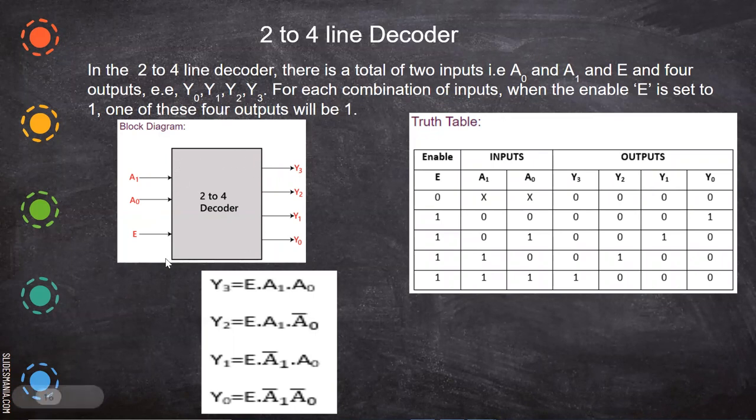In order to enable this decoder, if it is 0, this will not work. If it is 1, then the whole circuit will work. This is only a power for this. You can say it as a power for this two to four decoder.